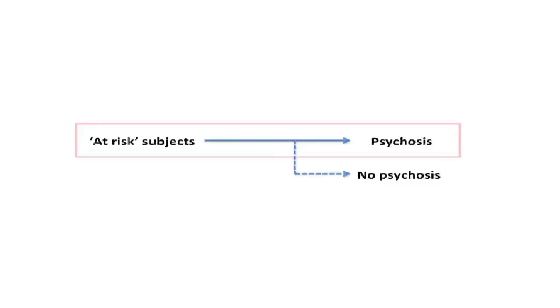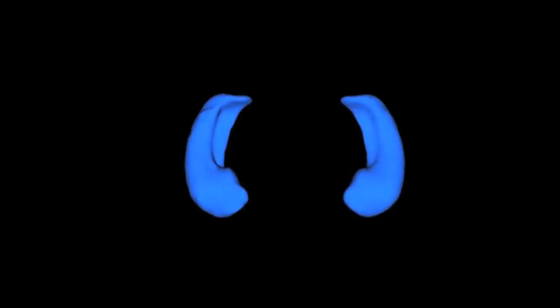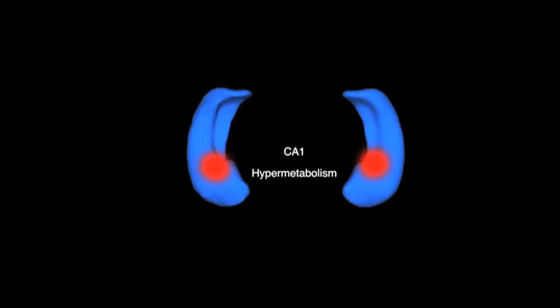What we found at time one, comparing prodromal subjects who subsequently progressed to psychosis versus those who did not, is that subjects who would subsequently progress over two and a half years' time had focal hypermetabolism in a select hippocampal sub-region, the CA1 subfield of the hippocampus. This was found in the absence of structural changes — there was no atrophy of the hippocampus at that period of time.